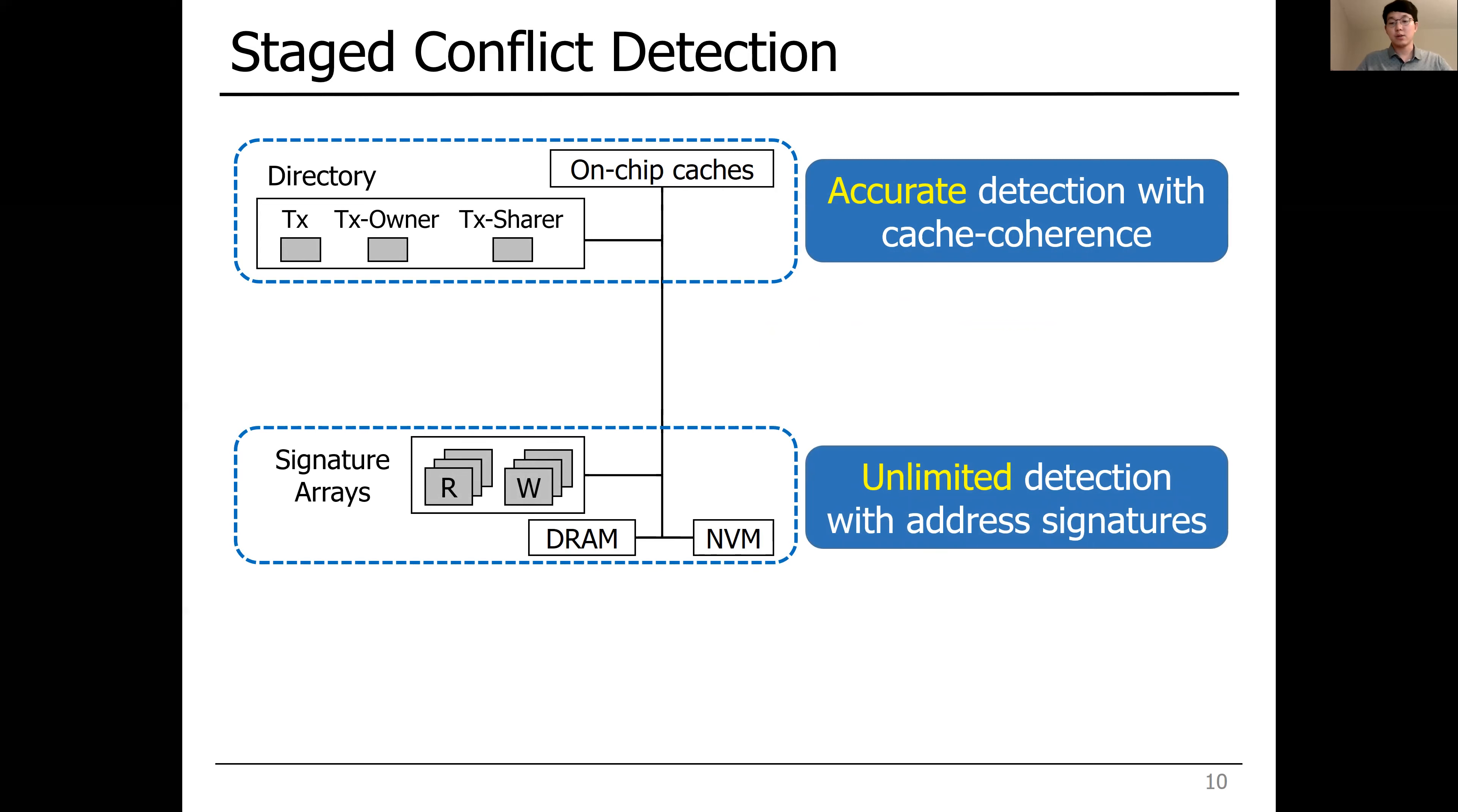And UHTM leverages address signatures for off-chip memories, which can detect data without limitation. Since address signatures only record cache-evicted blocks, it has much less chance to produce false-positives.